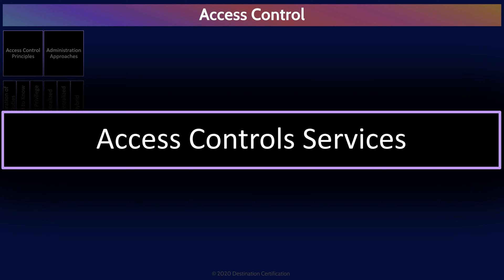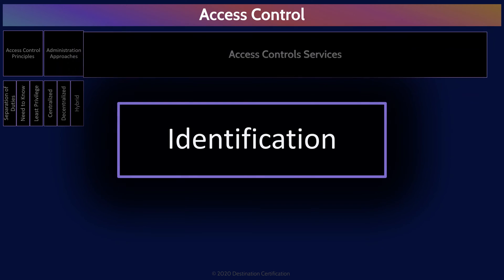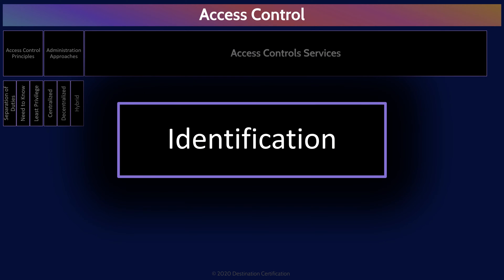Let's talk about access control services. There are four major services that all access control systems must provide: identification, authentication, authorization, and accountability. We'll start with identification. This is where the user must assert their identity to the system — for example, my username is rwitcher.